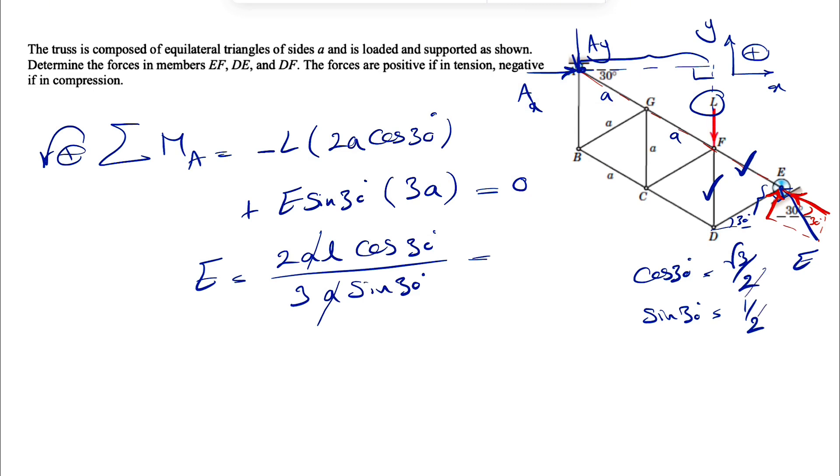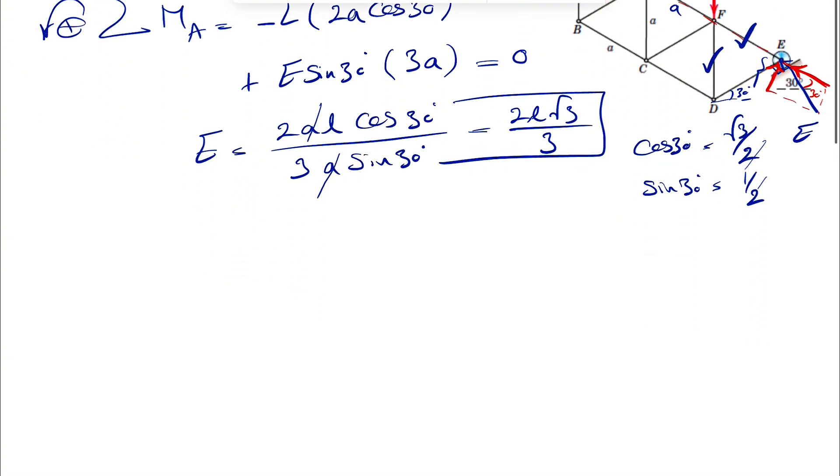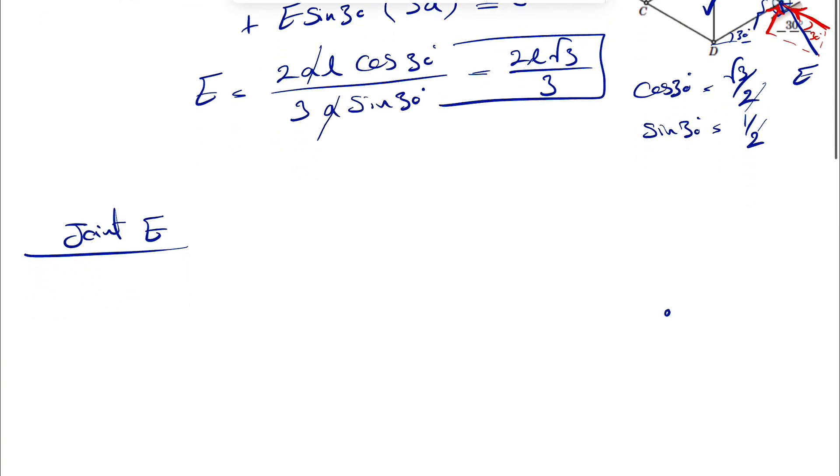So if we divide these two, these two will be cancel out, and we're going to end up with 2L square root of 3 over 3. So that's our E. And now we can start with the free body diagram of that joint.